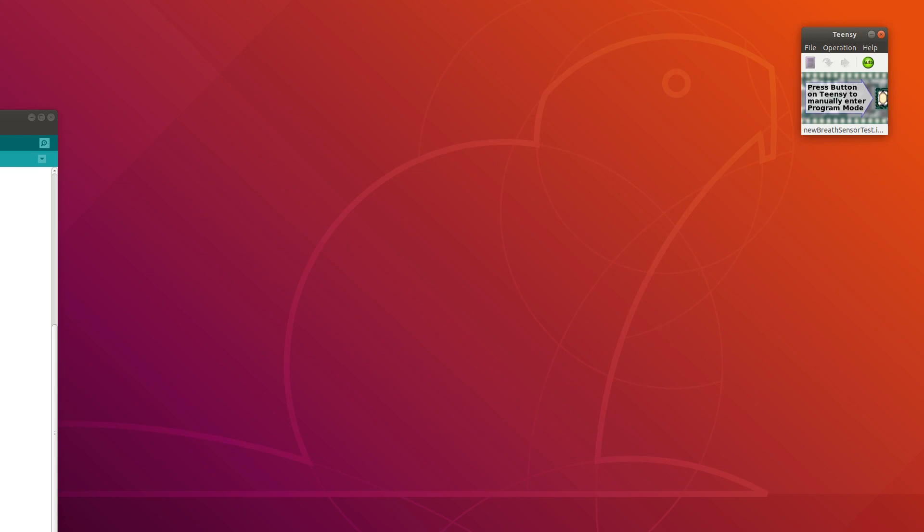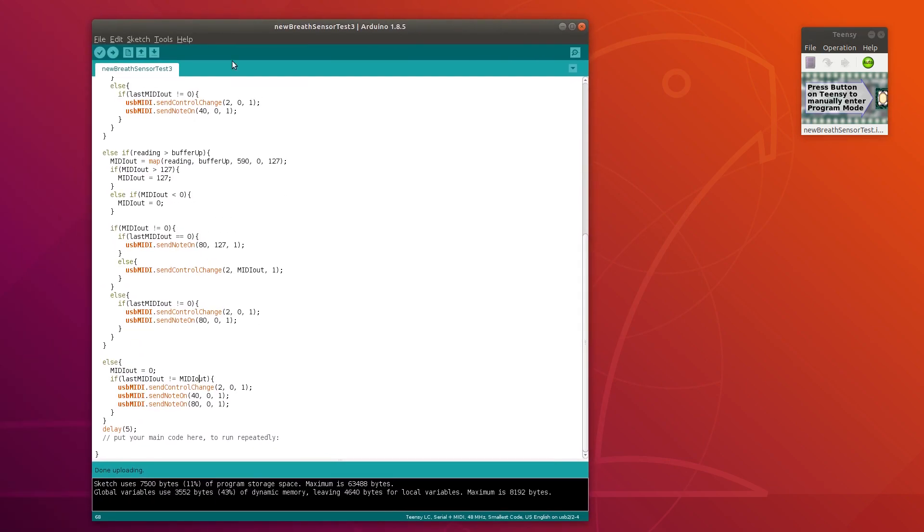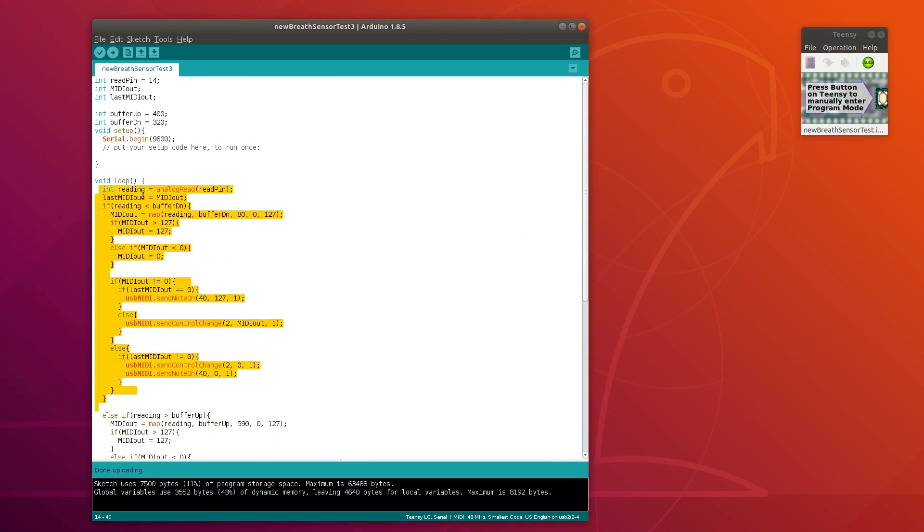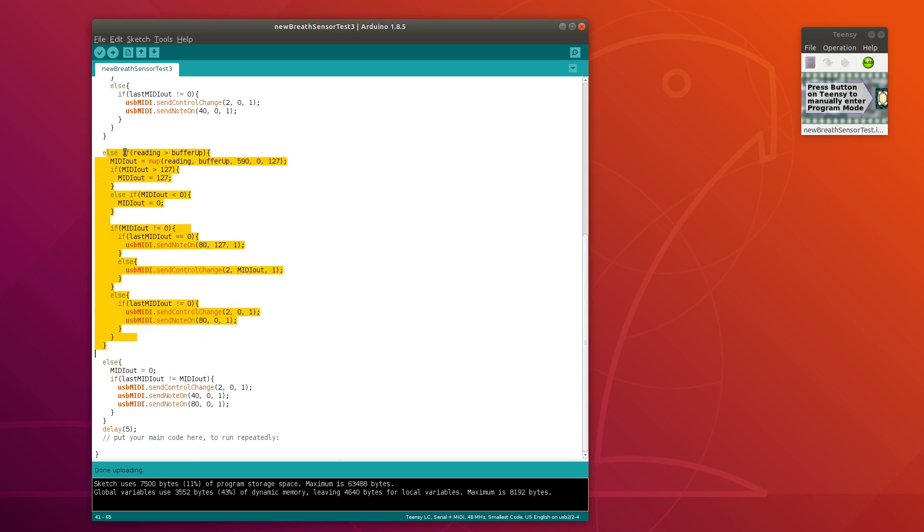Now let's put in some MIDI functionality. I had to expand the code from the other two builds so that this section of code is used if the reading is below this threshold here while this other part is used if the reading is above this other threshold here corresponding to the positive and negative pressure ranges.